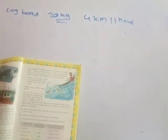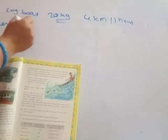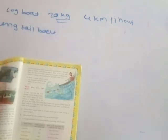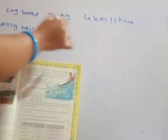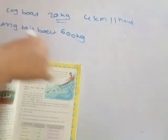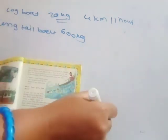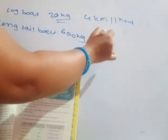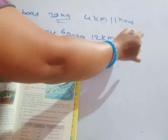The second boat is the long tail boat. The long tail boat catches 600 kg of fish, and the speed of this boat is 12 km in one hour.